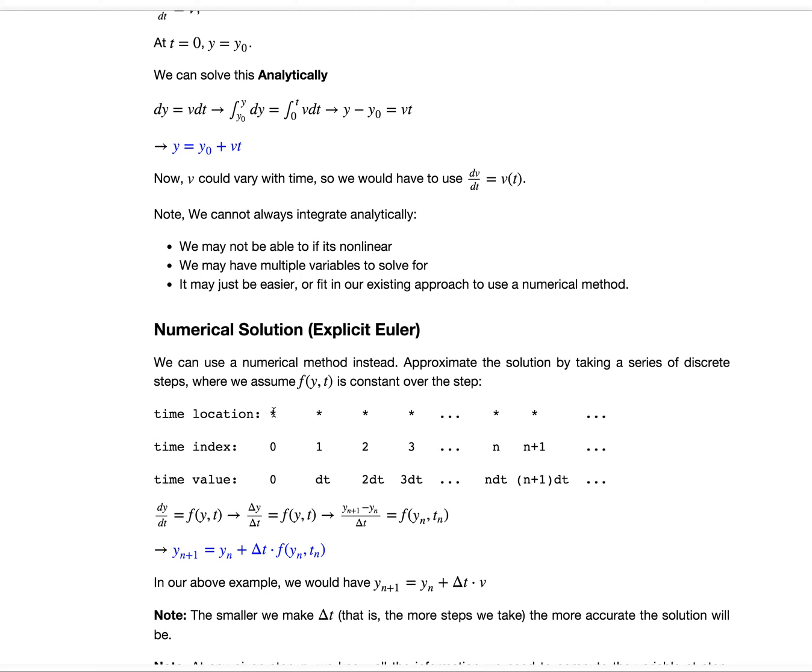We might have given steps indicated by these stars, where the step index would be time 0, time 1, time 2, time 3, and in general, we have time n, n time n plus 1. The corresponding time would be time 0, and then delta time, 2 delta time, 3 delta time, n delta time, n plus 1 delta time.